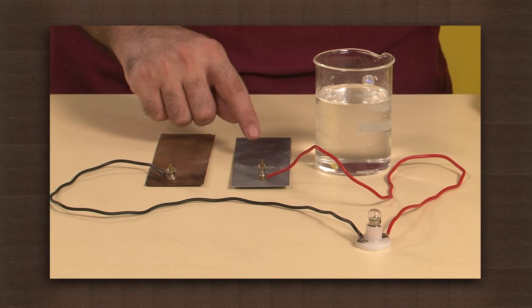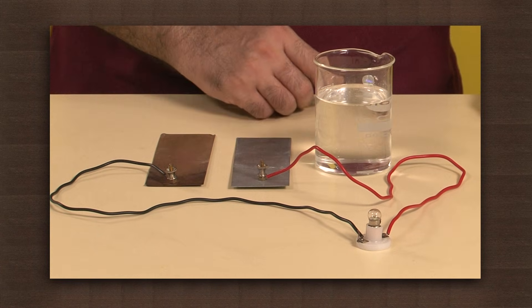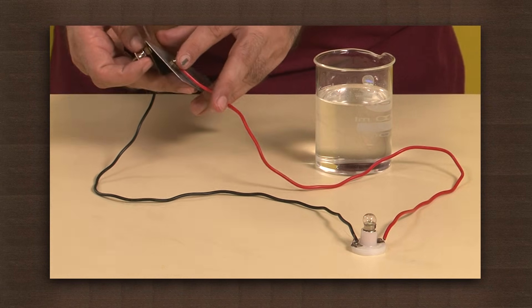We will need copper plate, zinc plate, wires and a bulb, and dilute sulphuric acid in a beaker. So now let's make one and see how it works.